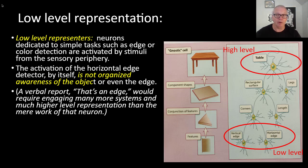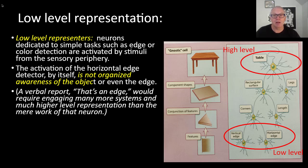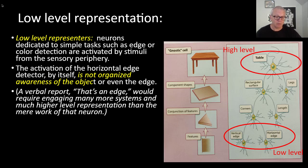A verbal report — referring back to Dehaene and Naccache — for somebody to be able to say 'oh, that's an edge' and report on what that low-level neuron is detecting would require engaging many more systems and be a much higher-level representation than the mere work of that neuron or even the table neuron, because you'd have to broadcast it over to verbal centers, speech, memory, and all kinds of other modules in the brain. So it's very oversimplified, but it introduces the idea of low-level versus high-level representation.